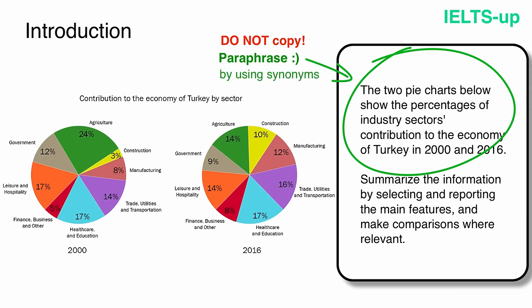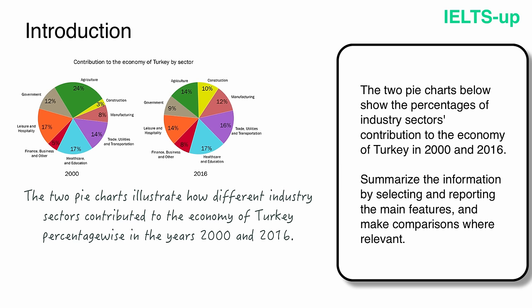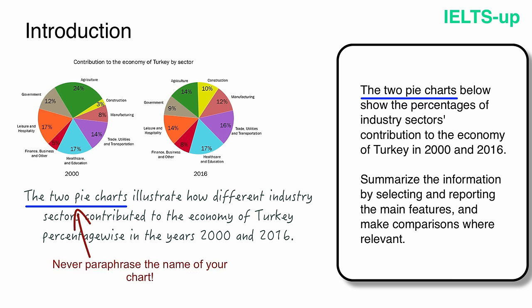Here is how I wrote it: 'The two pie charts illustrate how different industry sectors contributed to the economy of Turkey percentage-wise in the years 2000 and 2016.' You can notice that I did not change the name of the chart — you should never paraphrase the name of your chart. If you get a map, write map. If you get a table, write table. And if you get a graph, write graph. I also kept the same expression: 'The two pie charts.'